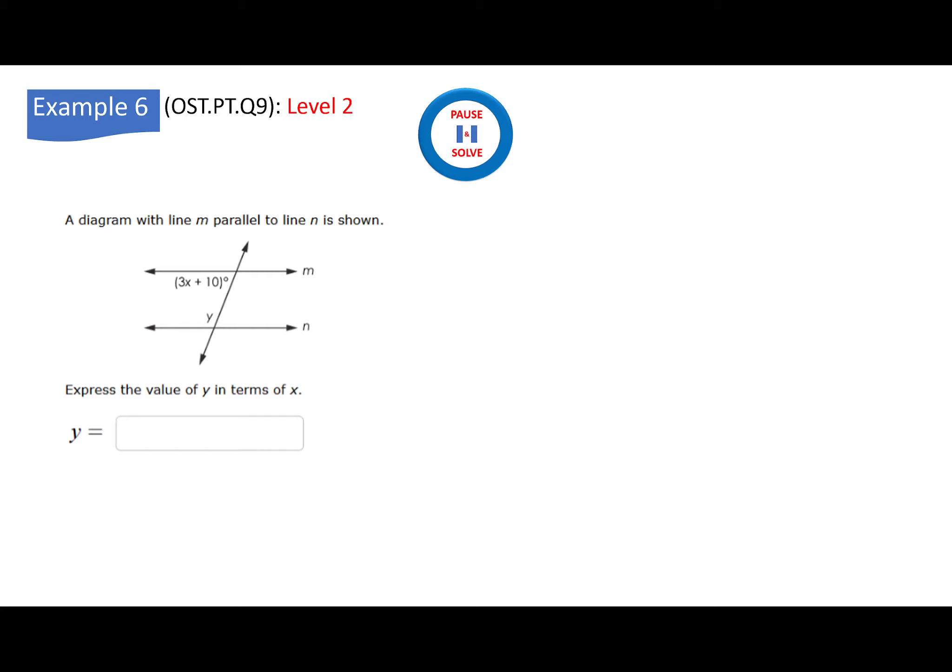Example 6. This is the last example. A diagram with line M parallel to line N is shown. Express the value of Y in terms of X. Here, what they want to know is if you know that if you add these two, you get 180. So now, Y plus 3X plus 10 is 180. Subtract 10, you get 170. Subtract 3X from both sides. So you get Y equals minus 3X plus 170. If you want to check your answer, if X is 0, Y is 170. This is 10, that's 170. That's fine. If X is 10, you have here 30, you have 40. Which means this one would be 140. X is 10 minus 30, 170 minus 30 is 140.